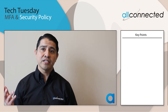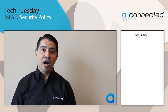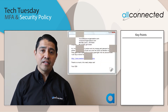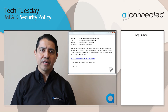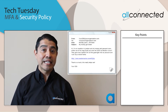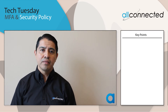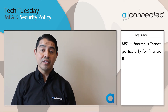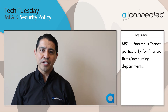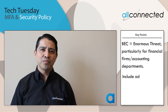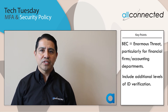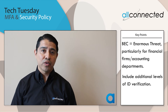What if the threat isn't a hacker trying to log in to a system where data can be compromised, but instead the threat is something like a spear phishing campaign against your accounting department directing that a large amount of money be transferred? Business email compromise is an enormous threat to organizations, particularly in finance departments. That's why it's important to include additional levels of ID verification even when you're dealing with direct correspondence.